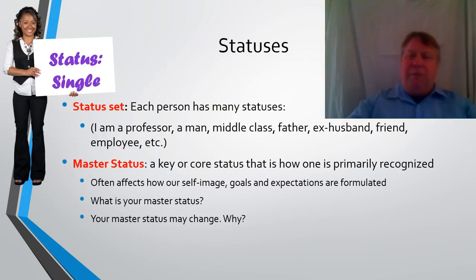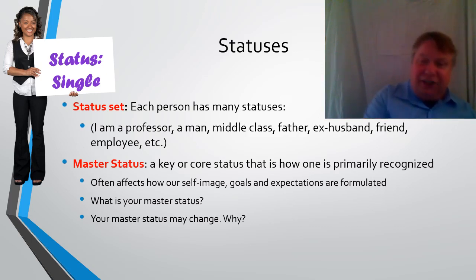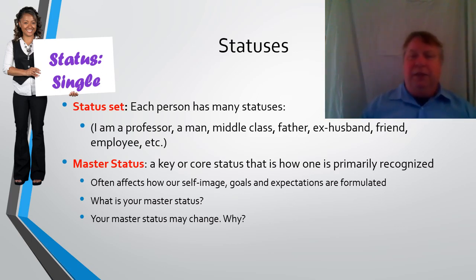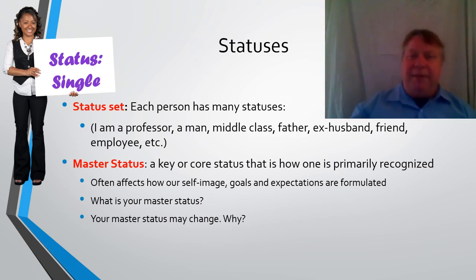Because we occupy different positions in different institutions, we have a status set — a number of different statuses that we fill at the same time. For example, I'm a professor in the educational institution; in the family I'm a father, a husband, a man; in the economic system I'm middle class; in the club I'm a friend; in the workplace I'm an employee. These are all different statuses.